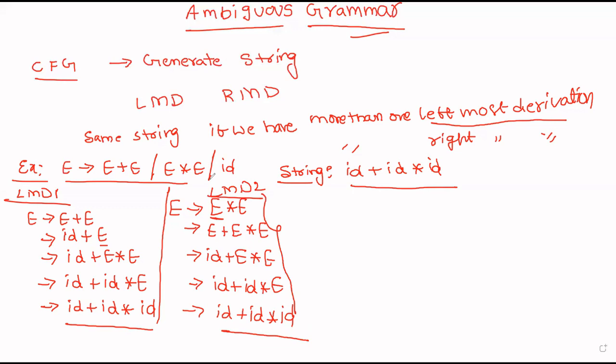Then that grammar is called ambiguous grammar. We can check for rightmost derivation also. If it is satisfied — that is, either more than one leftmost or more than one rightmost — then the grammar is ambiguous grammar. For our convenience, I will demonstrate the rightmost derivation also.